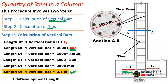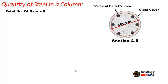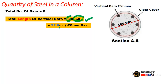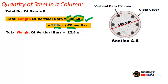The length of one vertical bar is 3.8 meters. The total number of bars in this circular column is 6, so the total length of vertical bars equals 6 times 3.8, which is 22.8 meters. Steel is available in the market by kg or tons, so we need to convert this total length into weight. We will calculate the unit weight of the bar.